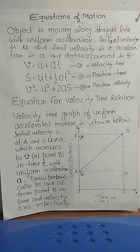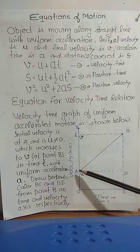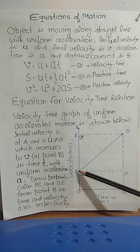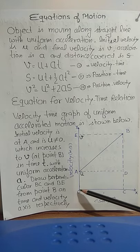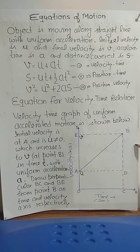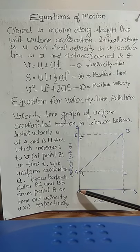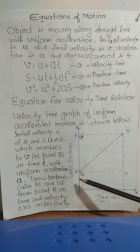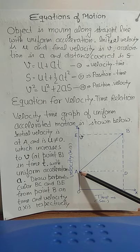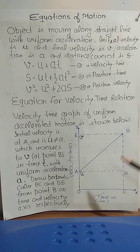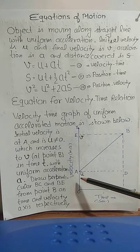An object moves from point A. If the object started from origin O, it would start with 0 velocity and the graph would go from there — in that condition, the initial velocity would be 0, meaning it starts from rest. But I have considered point A, and therefore this point represents the initial velocity. The object is not at rest and its velocity is U. This graph shows that velocity is increasing with time.